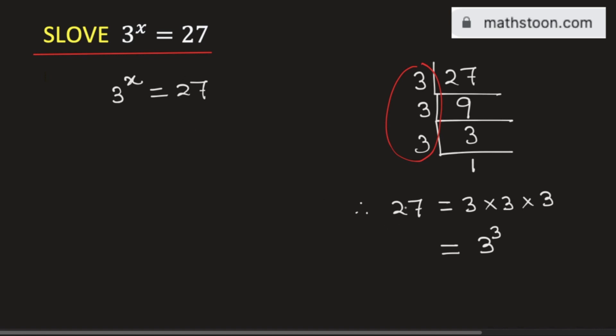Now substituting the value of 27 here, this equation can be rewritten as 3 to the power x is equal to 3 to the power 3. As we have the same base 3, the exponents will be equal. So we can say that x is equal to 3.